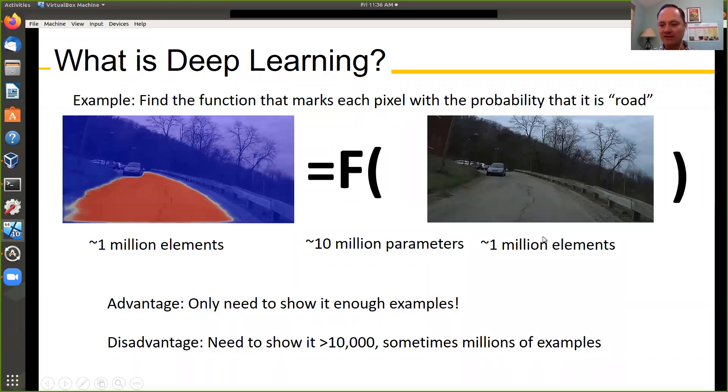The amazing thing is that images have about a million elements, the result has a million elements, and the function which we are using here has about 10 million elements. The great breakthrough was that deep learning, deep networks, can give you these kind of functions.